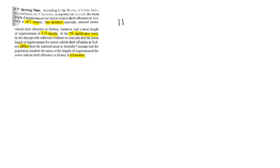The first thing we want to do is set up our null hypothesis and alternative hypothesis. Since the word "differs" means we just want to know if it's different, we have a two-tailed test. So our alternative hypothesis H1 is mu is not equal to 16.7, and our null hypothesis H0 is mu is equal to 16.7.